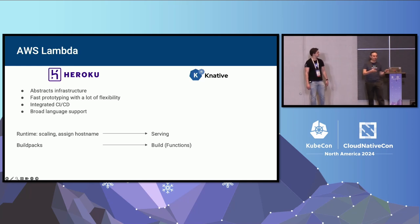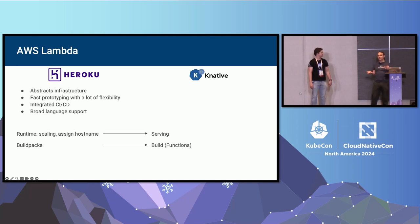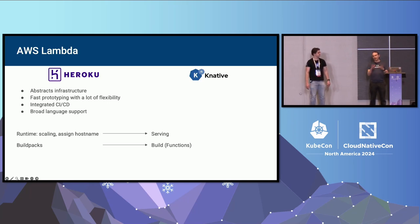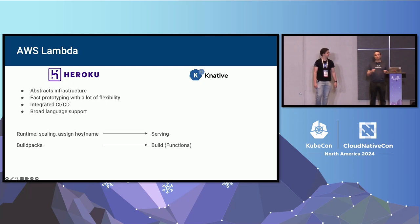Heroku has a lot more flexibility in what you run than Lambda does. Lambda is very restrictive — you are a function and you are this big. Heroku lets you bring in web apps and things like that, but still abstracts away a lot of infrastructure. One neat thing you get with Heroku — that Lambda got much later — is you get a hostname back. You give it your code and they give you back where you can reach your code, without setting up any network infrastructure.